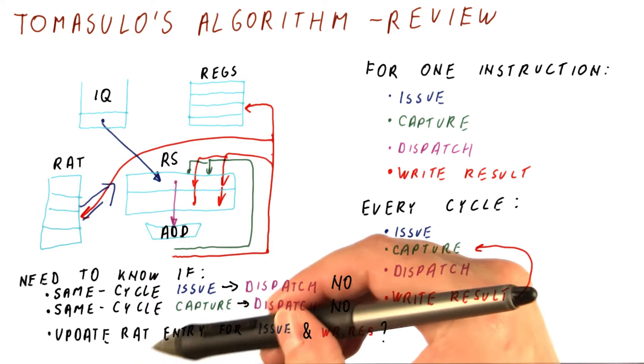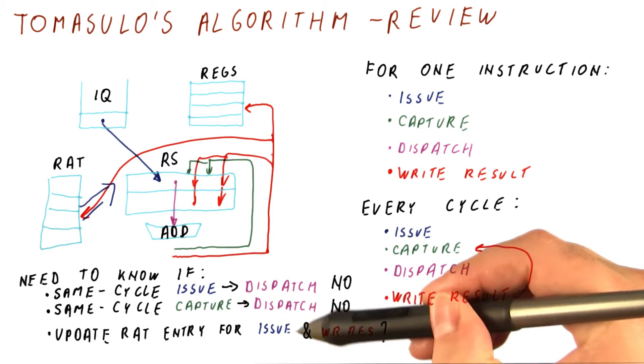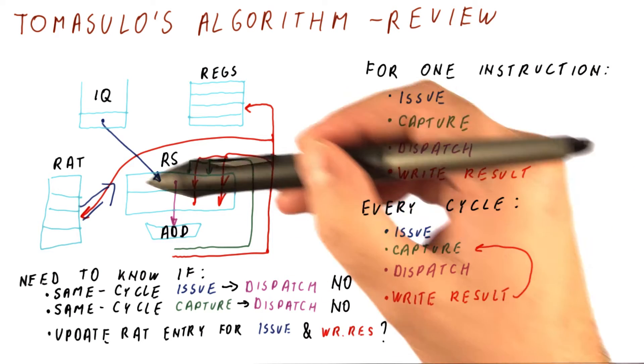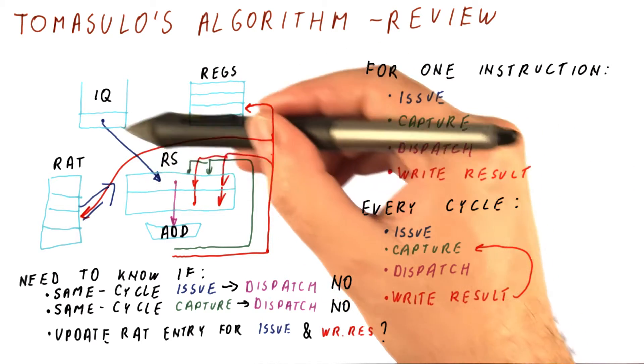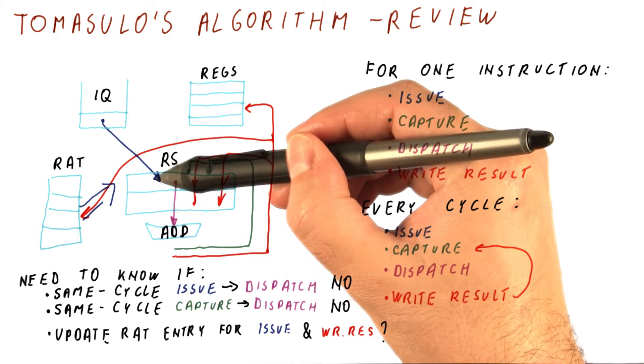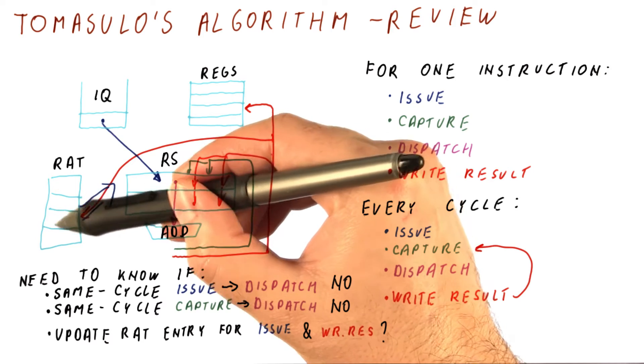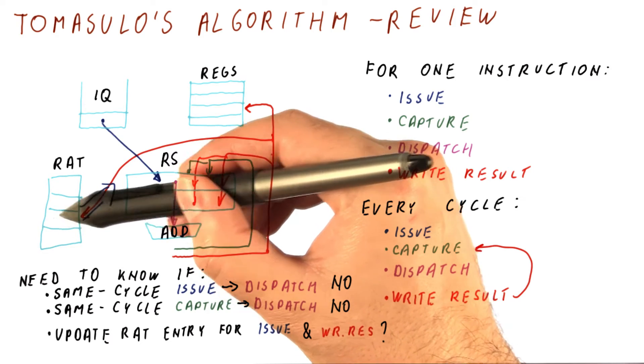And finally, can we update the RAT entry for both issue and write result in the same cycle? What's happening here is that an instruction that is being issued might need to update the RAT to change the entry that belongs to its destination operand.